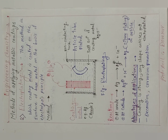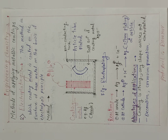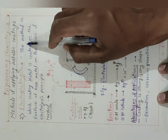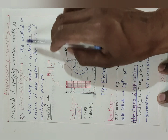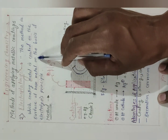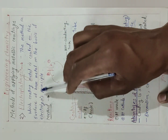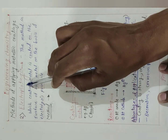Hi dear students, here is Prof. Anil Darekar. Today we are going to study the 2nd method for applying metallic coating, that is electroplating. As we studied hot dipping — galvanizing and tanning — now we will see the definition of electroplating. The method in which coating metal is coated on the surface of base metal on the basis of the electrolysis principle is known as electroplating.